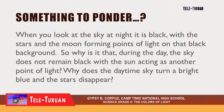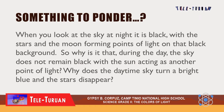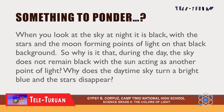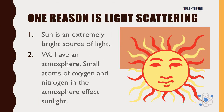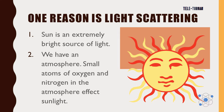When you look at the sky at night, is it black? With the stars and the moon forming points of light on that black background, why is it that during the day the sky does not remain black with the sun acting as another point of light? Why does the daytime sky turn a bright blue and the stars disappear? One reason is light scattering. The sun is an extremely bright source of light, and we have an atmosphere. Small atoms of oxygen and nitrogen in the atmosphere affect sunlight.